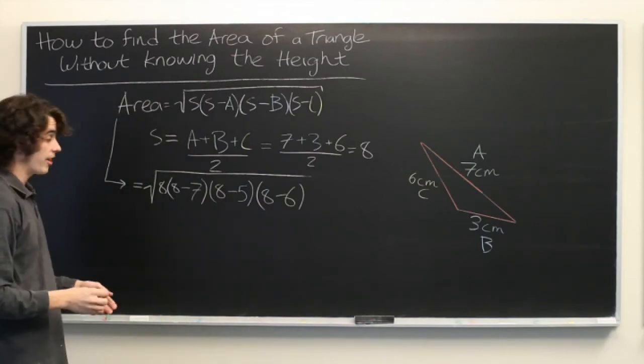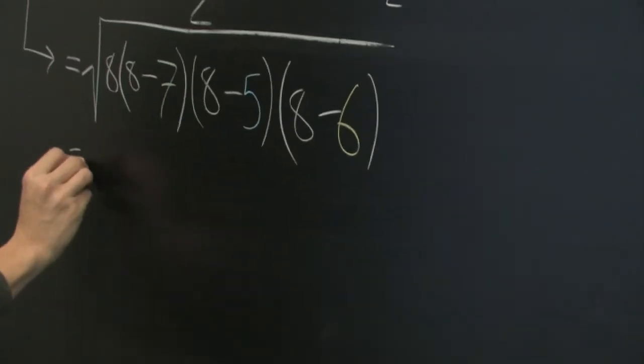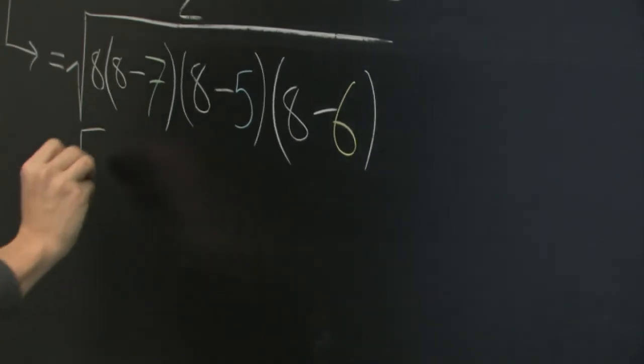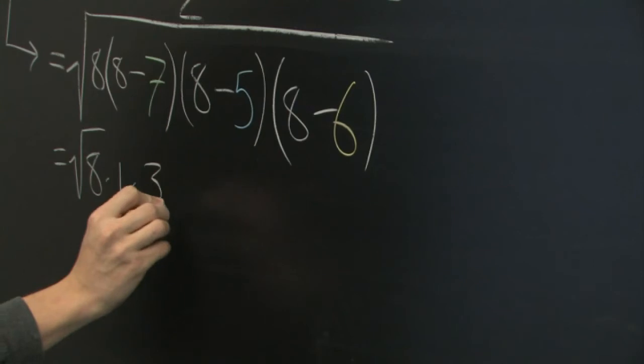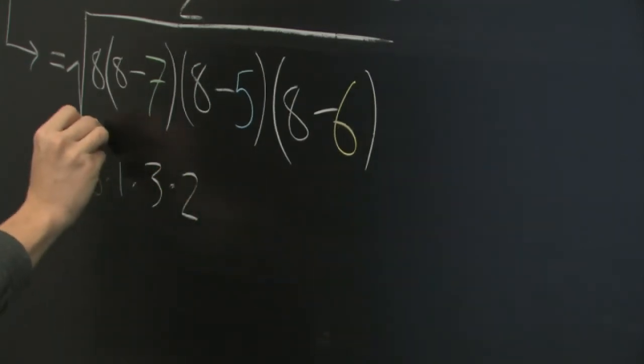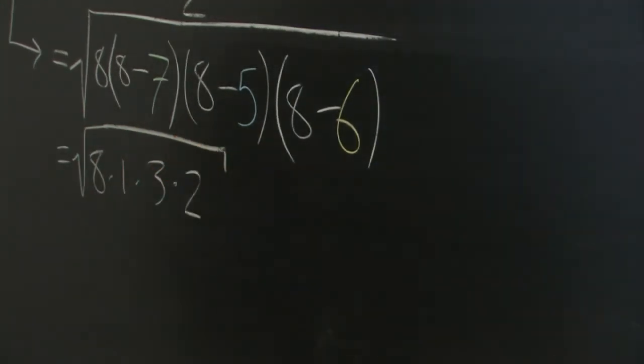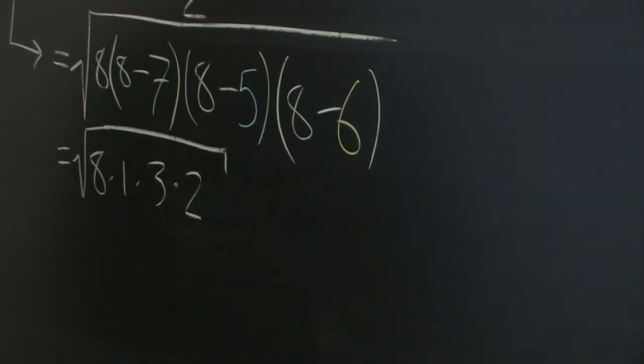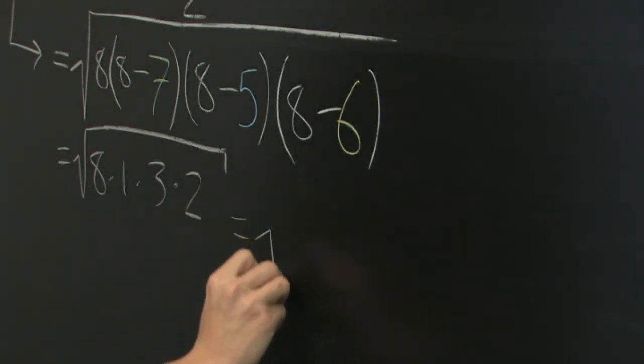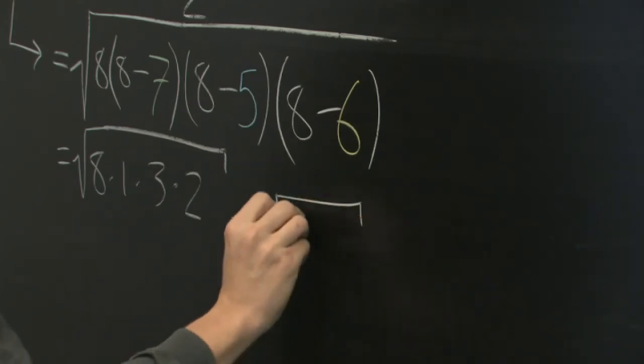Let's simplify this. This equals the square root of 8 times 1 times 3 times 2, which is the square root of 48.